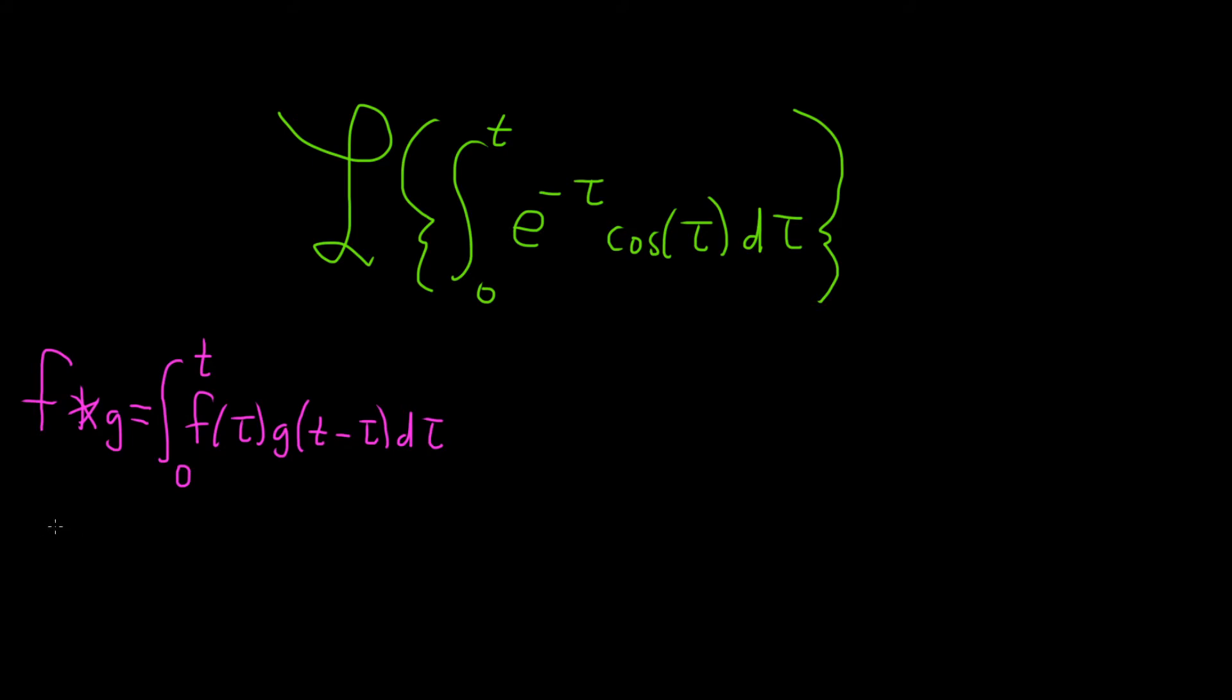Once we do that we can use a very powerful theorem called the convolution theorem that basically says if you have the Laplace of the convolution of f and g, this is equal to the Laplace transform of f times just regular multiplication, the Laplace transform of g. So this is called the convolution theorem.